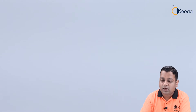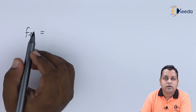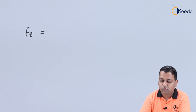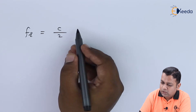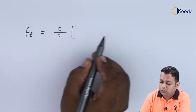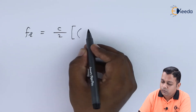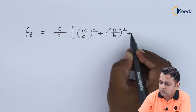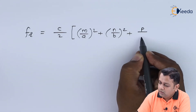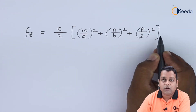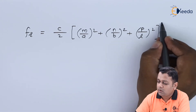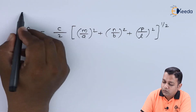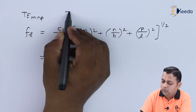The resonant frequency f_r in terms of mode indices m, n, p and dimensions a, b, l is expressed as: f_r = (c/2) × sqrt[(m/a)² + (n/b)² + (p/l)²], where the entire sum under the square root is raised to the power one half.